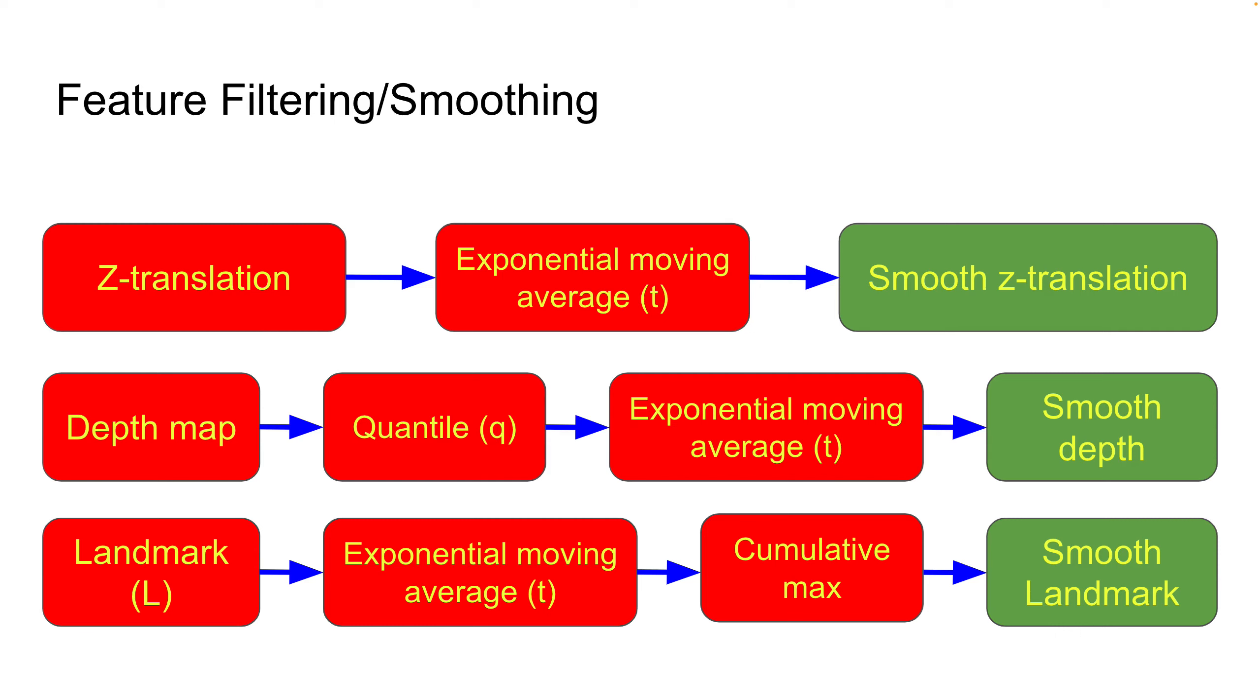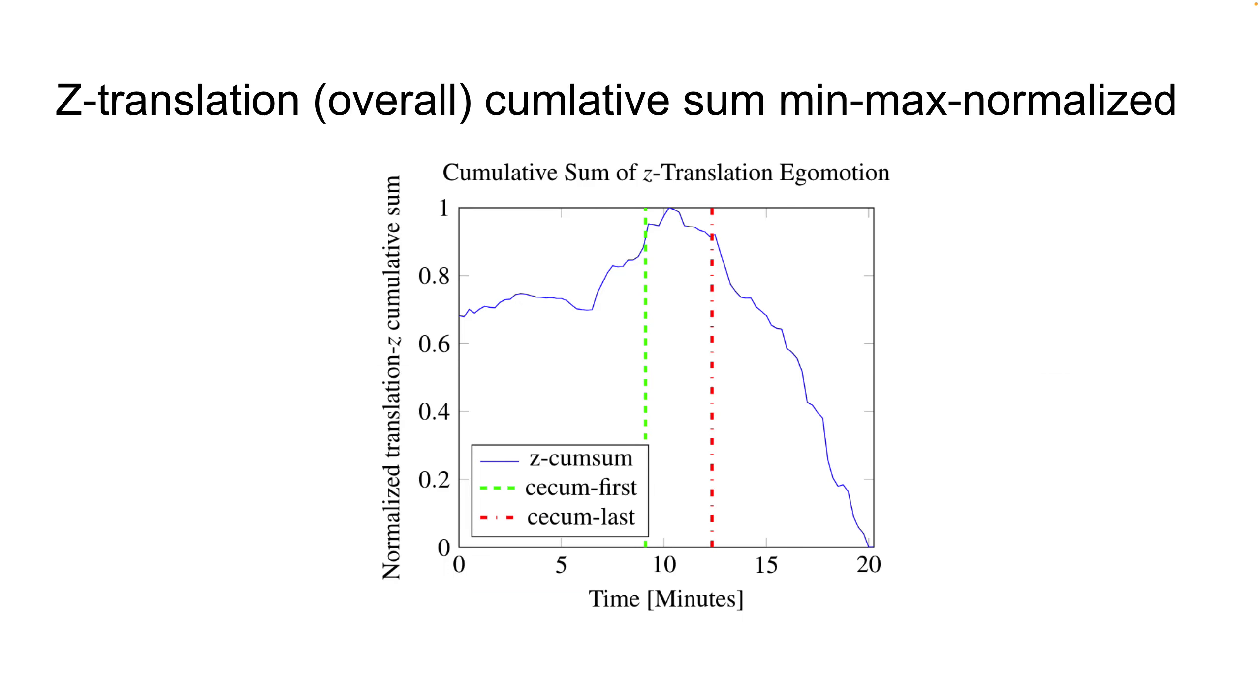The raw features are very noisy, so we do some smoothing, exponential moving average, to get robust features. And then we integrate the robust features into the per-frame classifier.